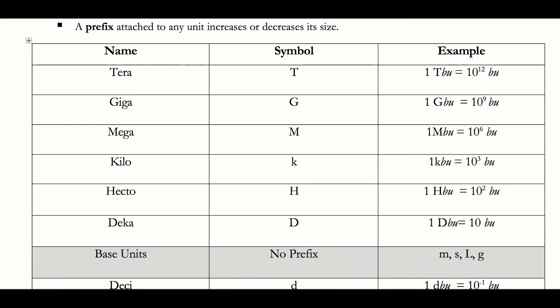If you put the prefix tera in front — for example, one terameter — that equals 10 to the 12 meters, making the unit much bigger. One gigasecond is 10 to the ninth seconds. One megagram equals 10 to the 6 grams. One kilometer, kiloliter, or kilogram equals 10 to the third meters, liters, or grams. One hectometer equals 10 to the second meters. One decasecond or decameter equals 10 to the first — just 10 seconds or meters.